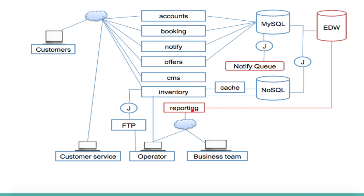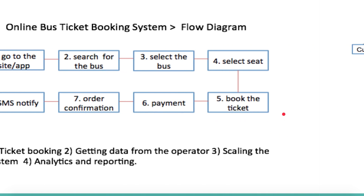One key use case: they want to figure out how many tickets are sold for the next month. If traffic is high and many tickets are booked, they can increase inventory or give deals to customers and forecast profit. Another use case: if ticket sales for the next week are below expectations, they can push deals to attract more customers to the system. They keep on interacting with the Enterprise Data Warehouse to get these reports and drive decisions.